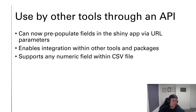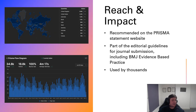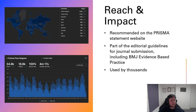Finally, I'd like to talk about the reach and impact of this package. Within the hosted version on shinyapps.io we use aggregated analytics — no personally identifiable information — and we can see that this has been accessed globally. In the last 90 days, for example, there have been over 18,000 unique visitors to the site. It's a big tool being used by lots of people, in part because it's recommended on the PRISMA statement website and is part of the editorial guidelines for journal submission in some journals including BMJ Evidence-Based Practice. But I think the big thing is simply because it's useful. Thank you to all of our users — if it wasn't used this much we wouldn't put the work into making it better.